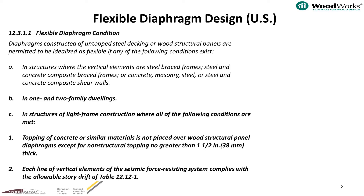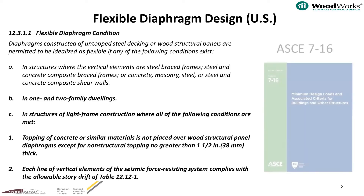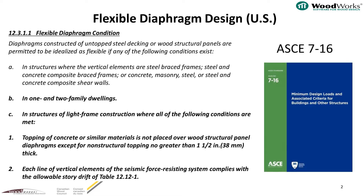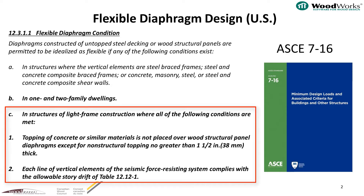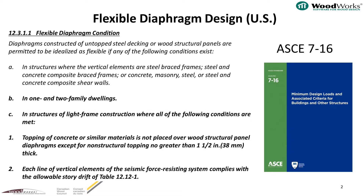For example, in the US, the American Society of Civil Engineers 7-16 clause 12.3.1.1 permits diaphragms from one or two family dwellings and certain light-frame wood diaphragms to be idealized as flexible. It is ultimately left up to your judgment, as the engineer, to decide which distribution methods to use.